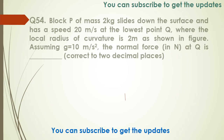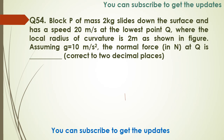Let me read out the next two-mark question. Block P of mass 2 kg slides down a surface and has a speed of 20 m/s at the lowest point Q, where the local radius of curvature is 2 meters as shown in the figure. Assuming g = 10 m/s², the normal force at Q is to be found.